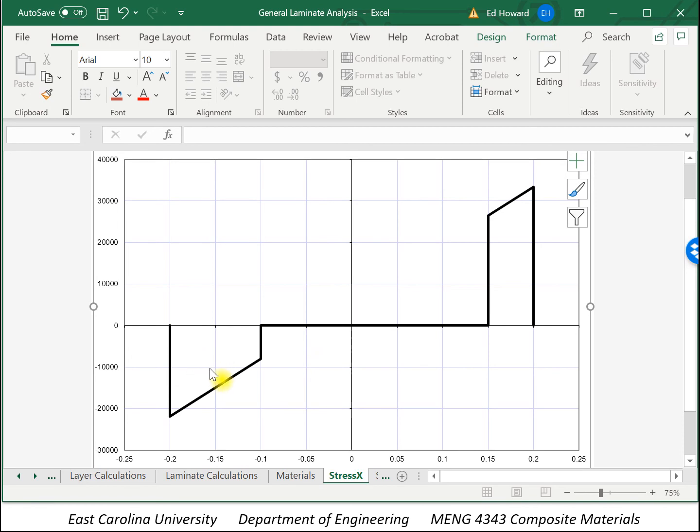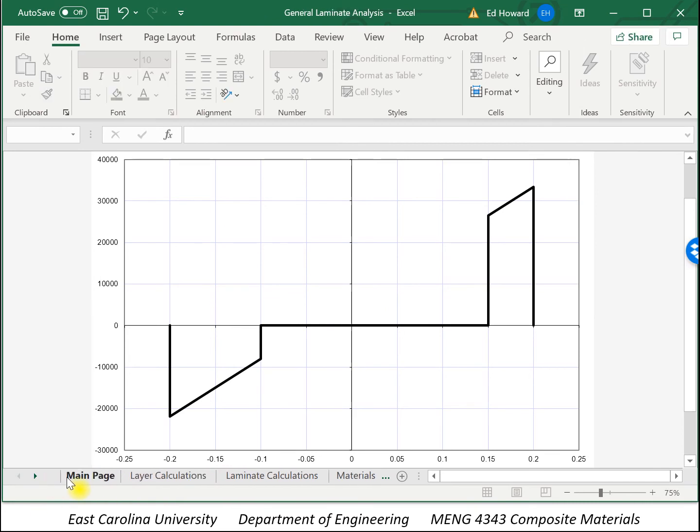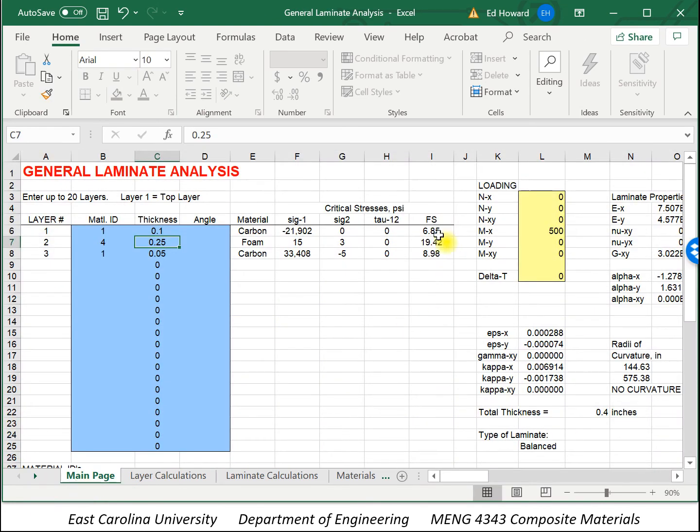And in this case, again, we've got a thicker layer on the top than we do on the bottom. And as you can see by doing that, again, it's no longer symmetric. But because of the fact that the compressive side is critical, by thickening that up, we were able to increase the factor of safety of the entire laminate.